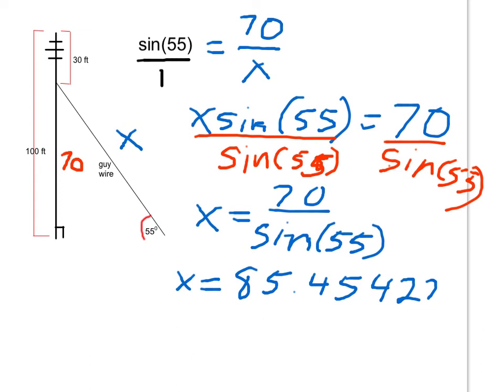On my calculator, I get that x equals 85.45427, etc. So I'm going to say to the tenths place, my final answer is that the length of the guy wire is 85.5 and the unit is feet.